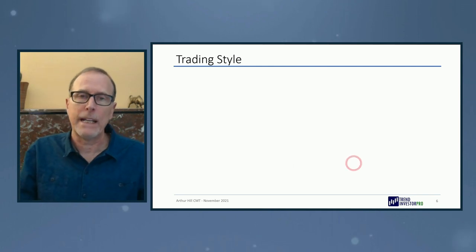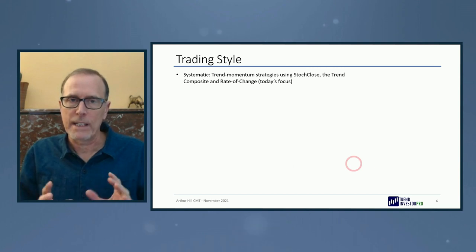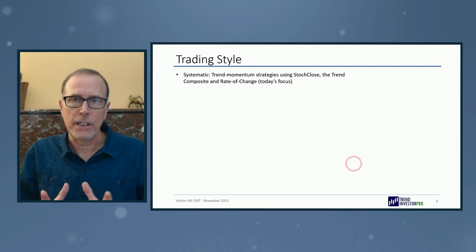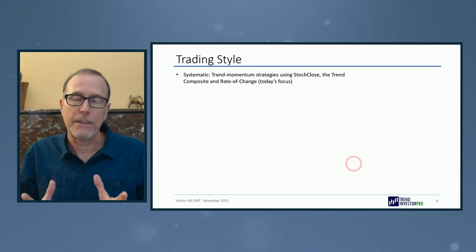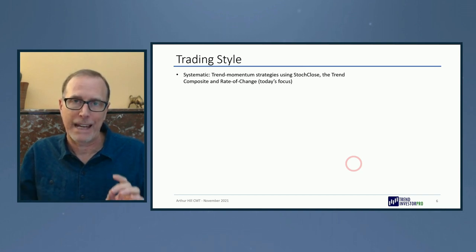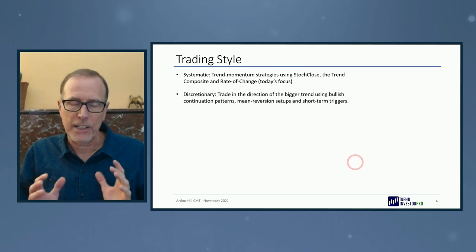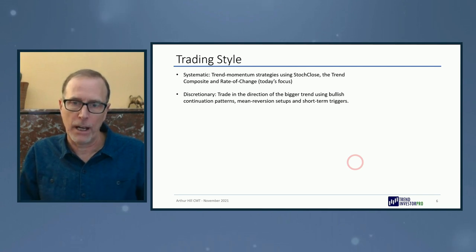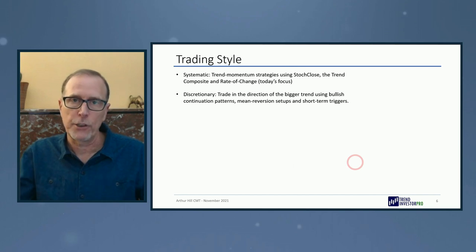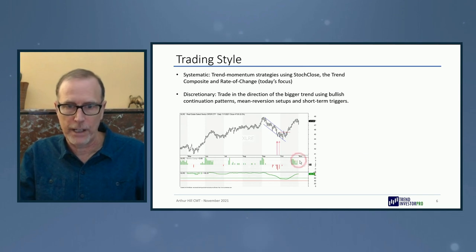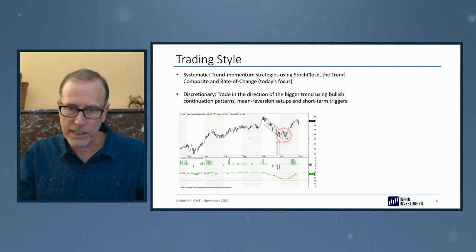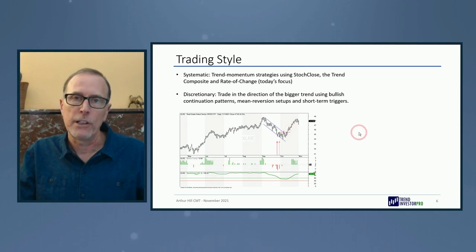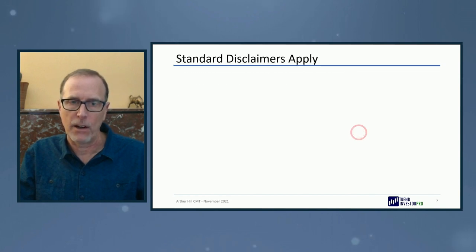My trading style has two sides. One is the systematic side, using trend-momentum strategies with the Stochastic Close indicators, the Trend Composite, and the Rate of Change — that's today's focus. The other is the discretionary side. I still love going through charts, but I focus on one thing: pullbacks within the bigger uptrend, looking for bullish continuation patterns, mean reversion setups, and a short-term trigger to confirm the trend has reversed. You can see a classic example with XLRE — a pullback into early October, stabilized, then broke out.